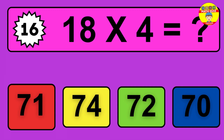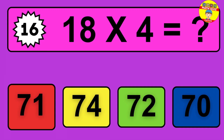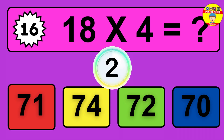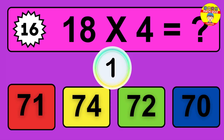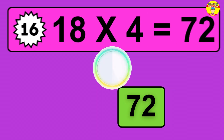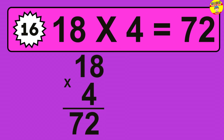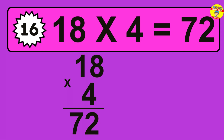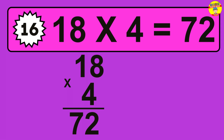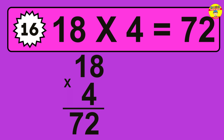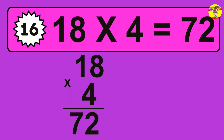Question 16. 18 times 4 equals what? The answer is 18 times 4 is 72. To calculate, we have 18 groups with 4 balls each one. So, how many balls do we have? 72 balls.